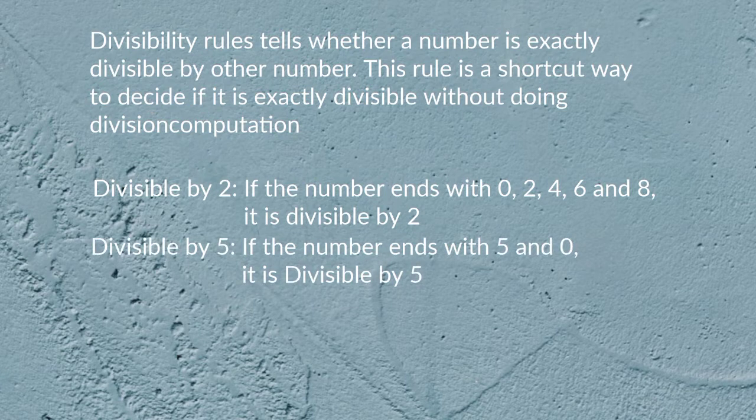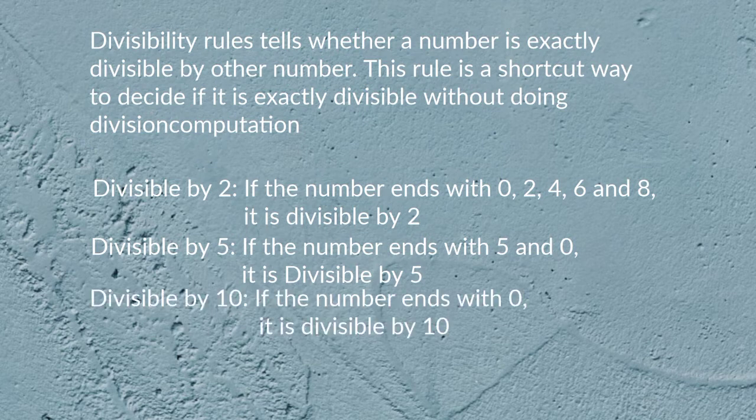Divisible by 5: if the number ends with 5 or 0, it is divisible by 5. Divisible by 10: if the number ends with 0, it is divisible by 10.